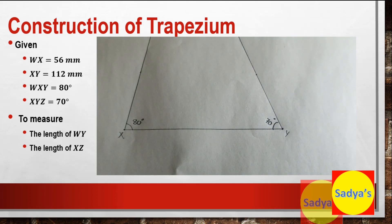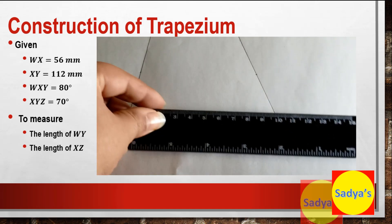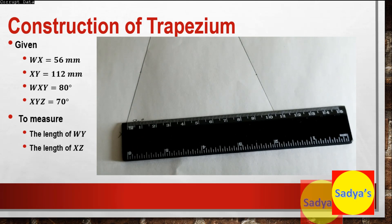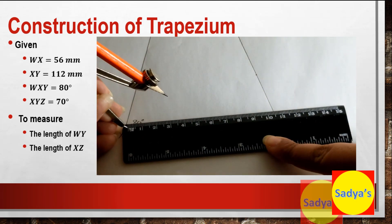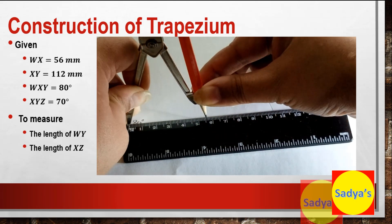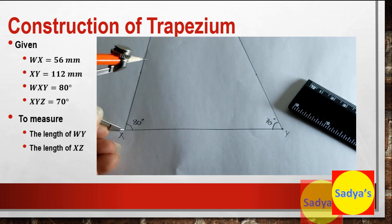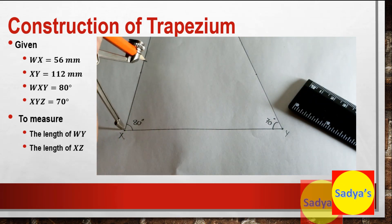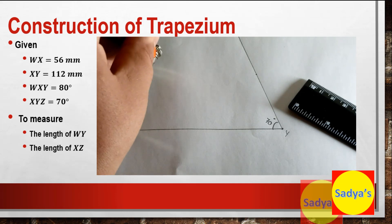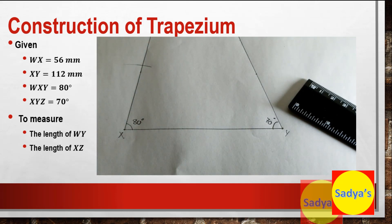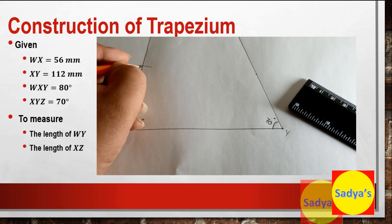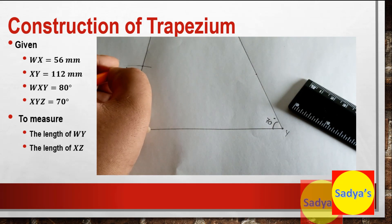They have given us that the measurement of WX is 56 millimeters, which is 5.6 centimeters. Take your compass and open it at a radius of 5.6 centimeters. From X, draw an arc which cuts the previous line, and this point where the line of the angle cuts the arc — this point would be point W.